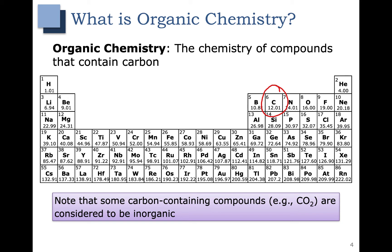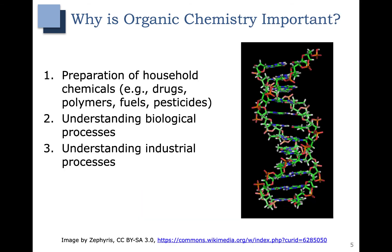You may have a nitrogen or an oxygen as well, but if you have lots of carbons and hydrogens, you probably have an organic compound. So why do we care about organic chemistry? Why is it important? Organic chemistry is critical to the preparation of a lot of chemicals you find around in your household — for example, drugs.